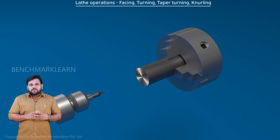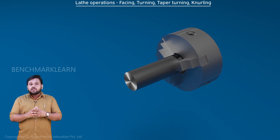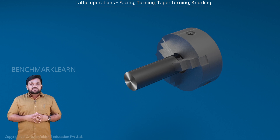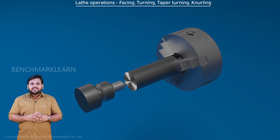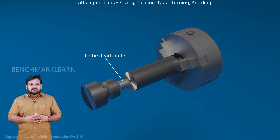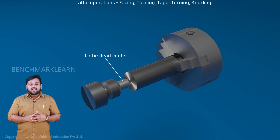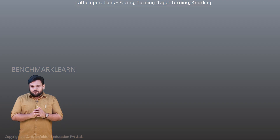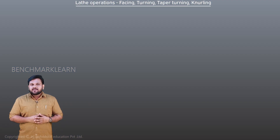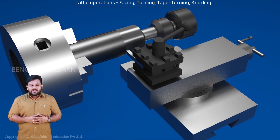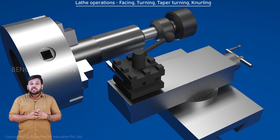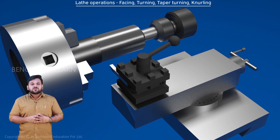The workpiece is partially pulled out from the chuck and the required length is exposed. Tailstock dead center is pushed onto the hole drilled at the end of the workpiece. Now both ends of the workpiece are centered and supported. The workpiece is rotated and the turning operation is done using a turning tool until the required diameter is obtained.